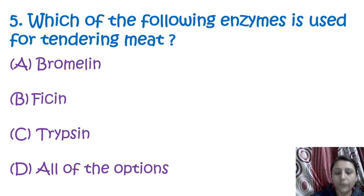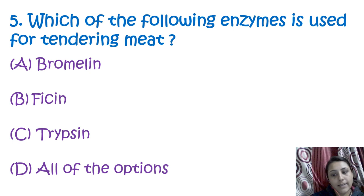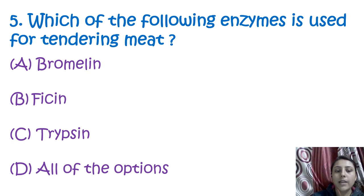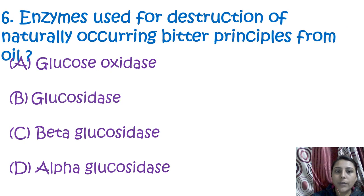The next question asks which enzyme is used for tenderizing of meat. Tenderizing of meat can be done by all three methods: bromelain, ficin, and trypsin are the enzymes used for tenderizing of meat. So the answer is all of the above.